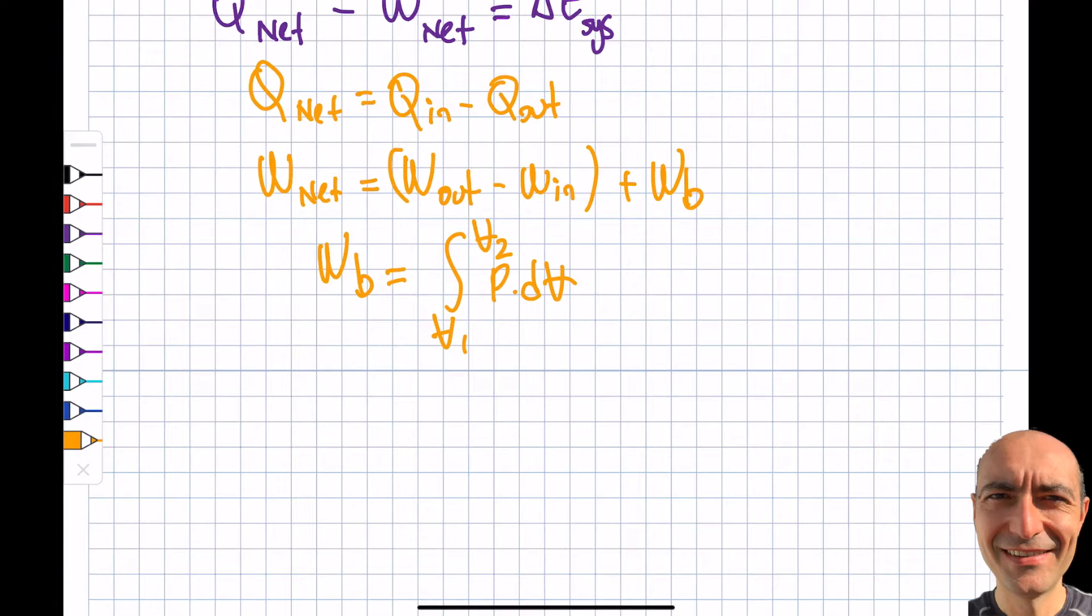I said there are three types of expansion or compression processes. Isothermal, where temperature is constant. Isobaric, where pressure is constant. Polytropic, where P times V to the power of n is constant. This formula is used a lot.